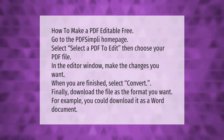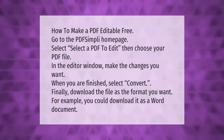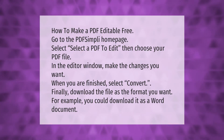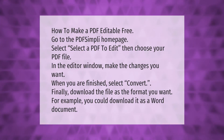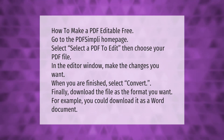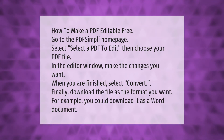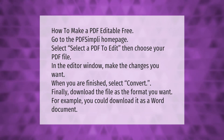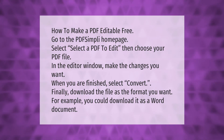How to make a PDF editable for free: go to the PDF Simply home page, select a PDF to edit, then choose your PDF file. In the editor window, make the changes you want. When you are finished, select convert, then download the file in the format you want.